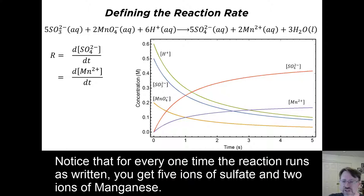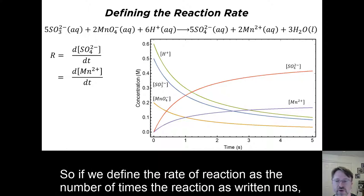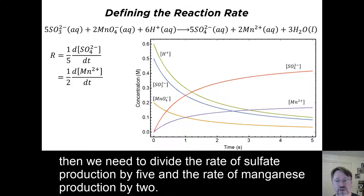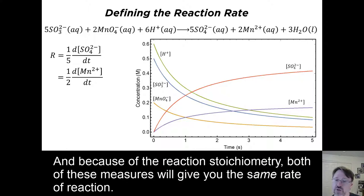Let's start with the products. Notice that for every one time the reaction runs as written, you get five ions of sulfate and two ions of manganese. So if we define the rate of reaction as the number of times the reaction as written runs, then we need to divide the rate of sulfate production by five and the rate of manganese production by two. And because of the reaction stoichiometry, both of these measures will give you the same rate of reaction.